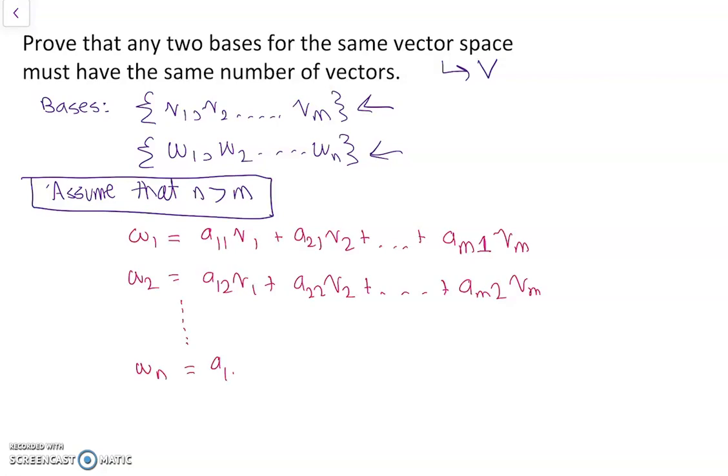Which is A1MV1 plus A2NV2. Oh wait, I should say A1NV1 plus A2NV2 plus up to AMNVm.